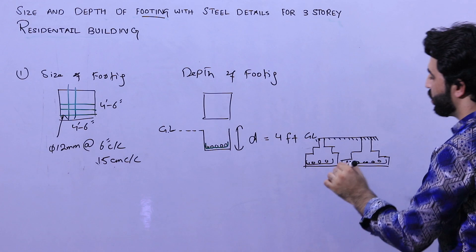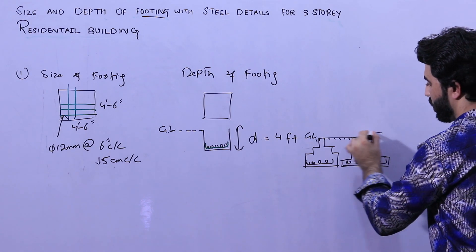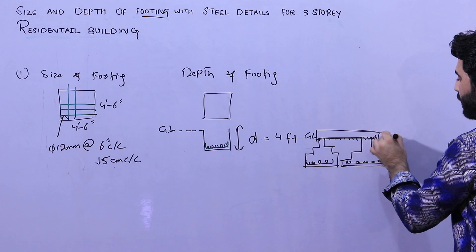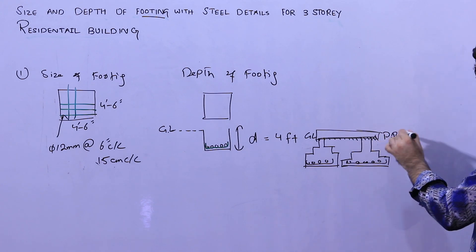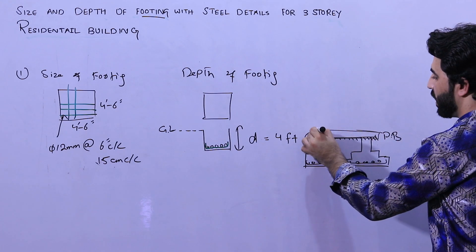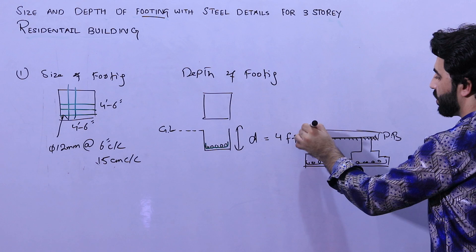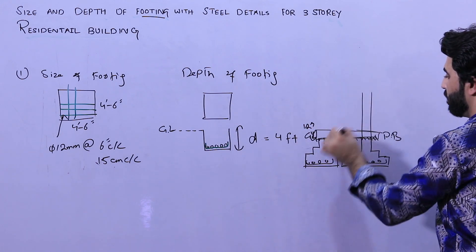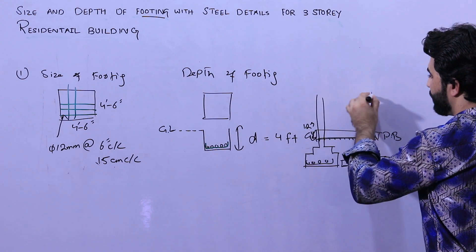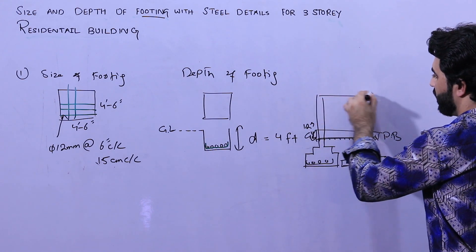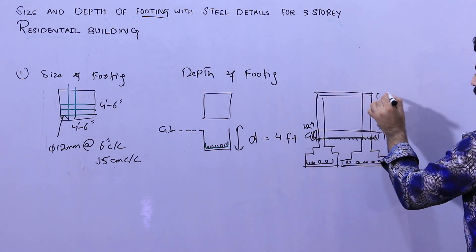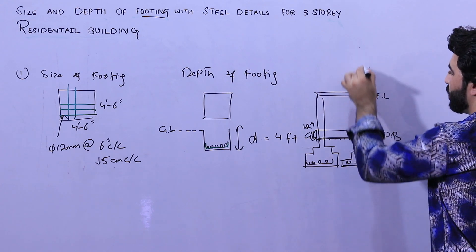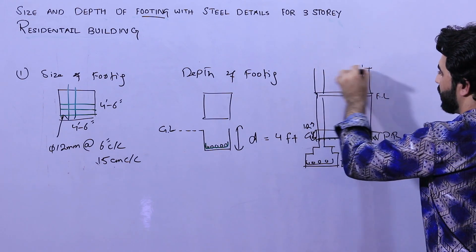This is a single mesh. On top of this, you can provide the plinth beam. The depth of this plinth beam should not be less than 12 inches. On top of that, as you can see, this is the column, and here is the finished level of the floor, with another column on top.